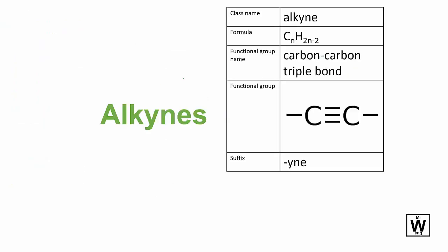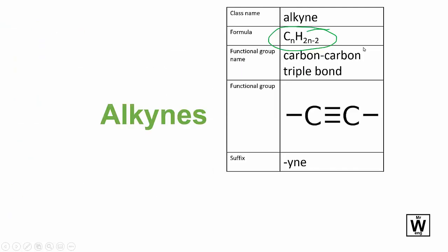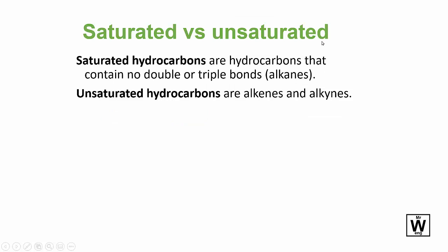We'll call that functional group a carbon-carbon triple bond, and that's the formula there. Have a go at seeing if you can work out that formula based on this information here — maybe write out some of these and see if you can come up with it. The suffix is '-yne'.